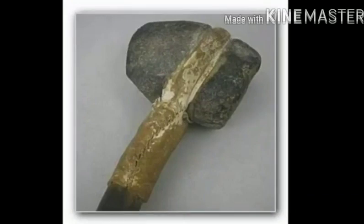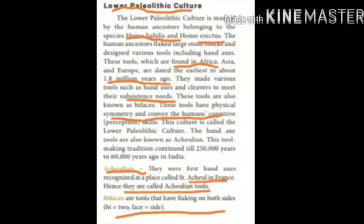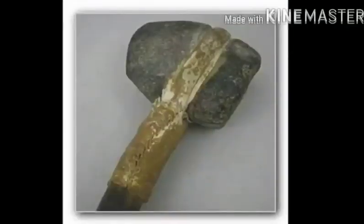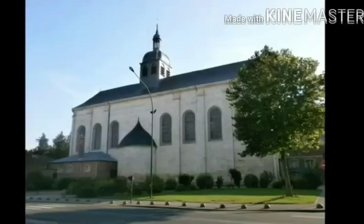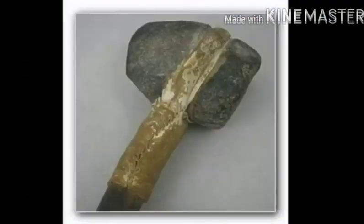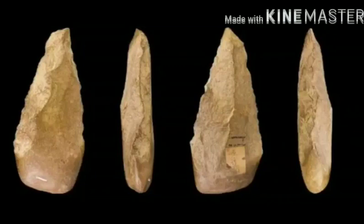Next, we will see about Achulian. What is the meaning of Achulian? Achulian refers to one kind of tools — they were hand axes first recognized at a place called St. Acheul in France. Hence, they are called Achulian tools.